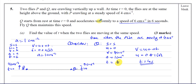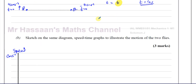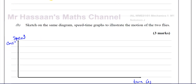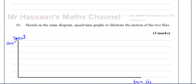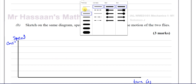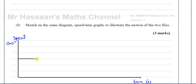Let's start with the easy one, which is P. P is crawling at a steady speed of 4 centimetres per second, so it's just a horizontal line at 4 the whole time. That's P.